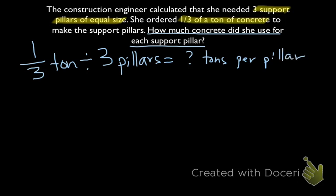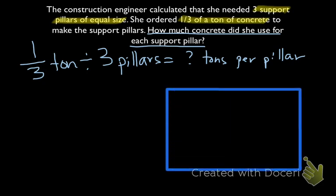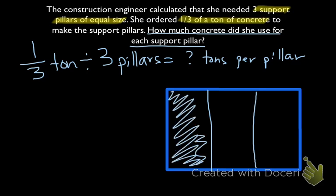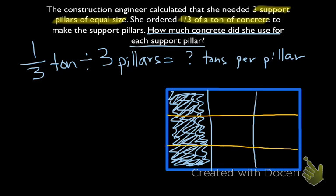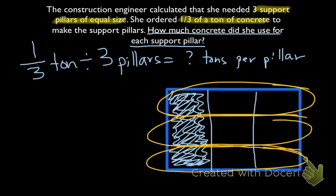So if we wanted to draw a model for this, let's start with a rectangle here and say that we're going to divide it into thirds. There we go, we shaded in 1 third of that. That's going to show us 1 third of a ton of concrete. And we're going to divide that by 3, so we're going to take this and split it by 3. So now we've made 1, 2, 3 equal groups.